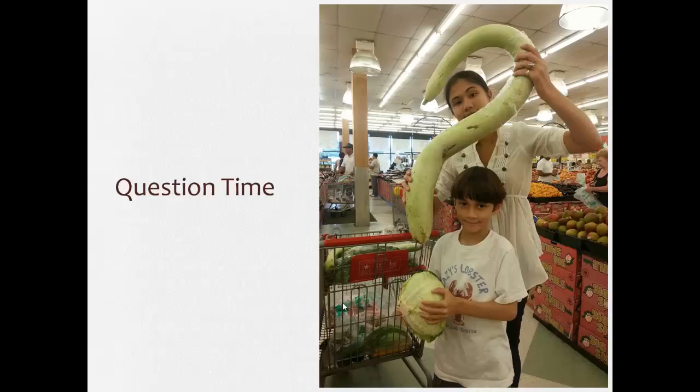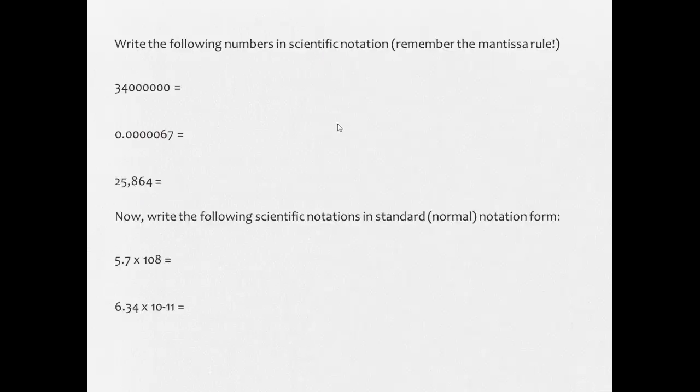All right, question time. Write the following numbers in scientific notation. Remembering the mantissa rule. What the mantissa rule means, again, is you'll have one number before the decimal. You can have multiple after, and it's times 10 to the something. Remember, negative if it's less than 1, positive if it's greater than 1. And then you'll write these following scientific notation as regular numbers.